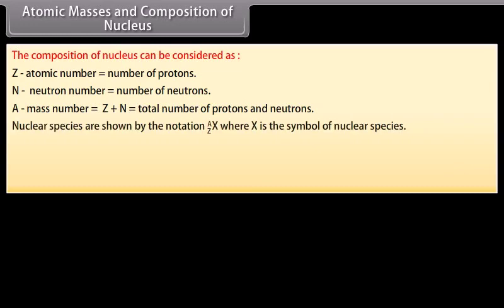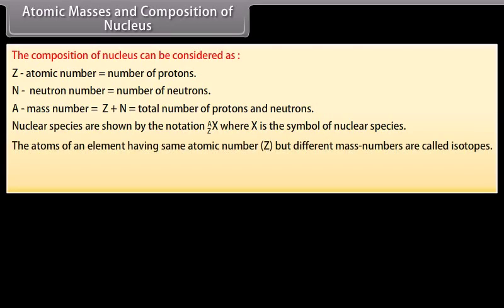Nuclear species are shown by the notation where X is the symbol of nuclear species. The atoms of an element having same atomic number, that is Z, but different mass numbers are called isotopes. For example, isotopes of hydrogen are...